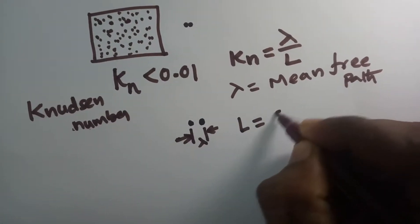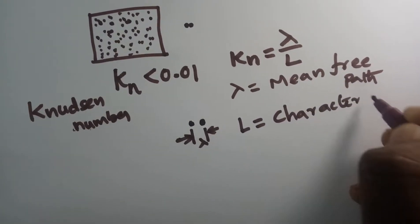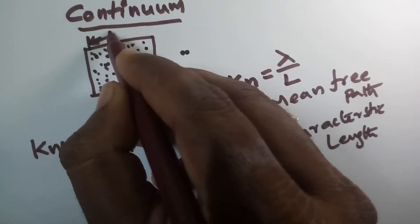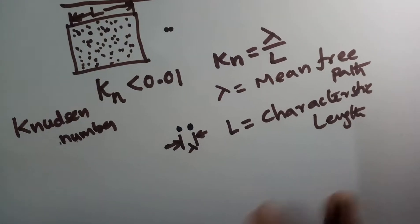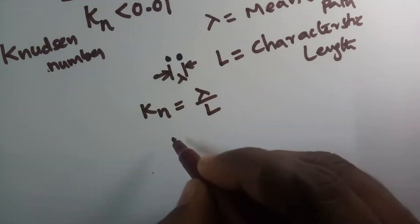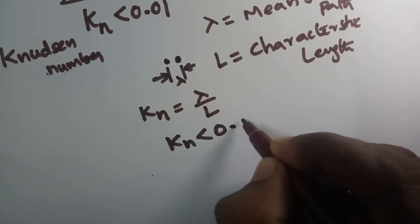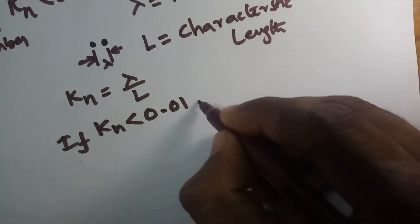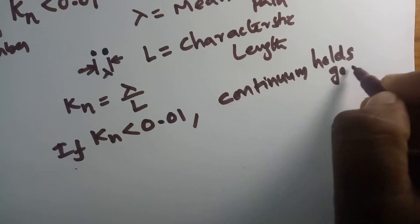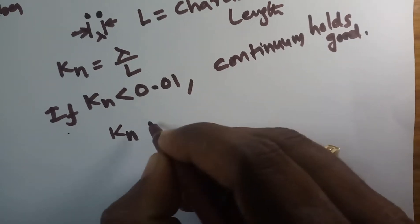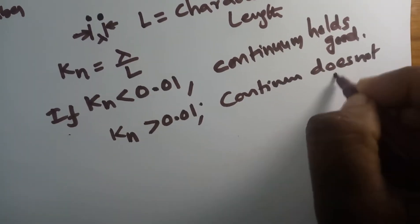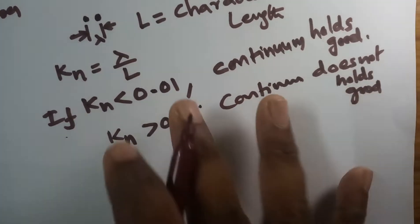What is L? L is a characteristic length. Characteristic length — suppose this is a container, the length of the container is nothing but the characteristic length. So if Kn equals lambda by L, and Kn is less than 0.01, then continuum holds good. If Kn is greater than 0.01, continuum doesn't hold good. This is very important.